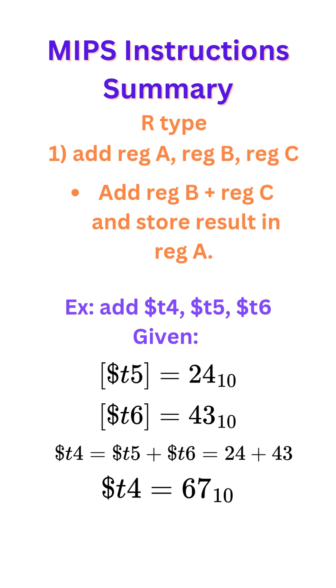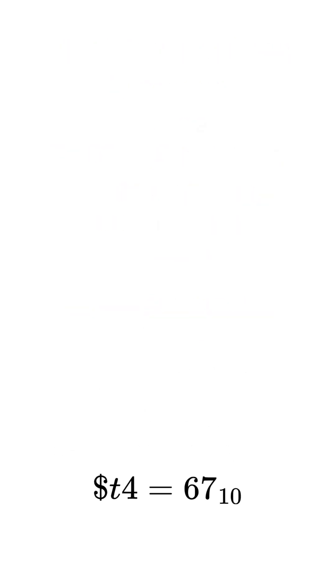Example: add T4, T5, T6. We're given the contents of T5 and T6, so in T4 we would do T5 plus T6, which is 24 plus 43, to get 67, which is stored in T4.